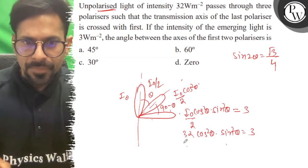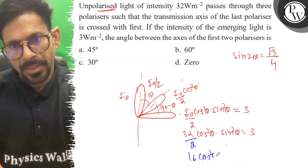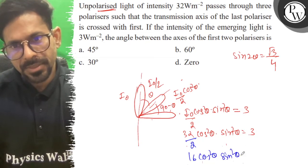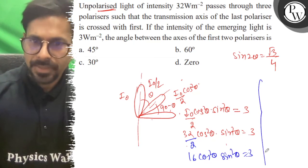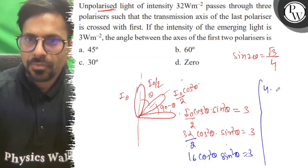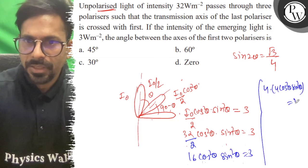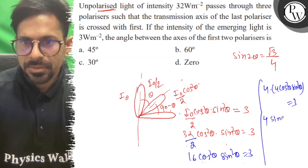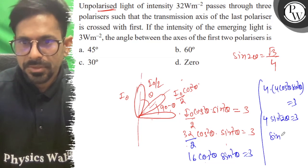So this is 16 cos squared theta sin squared theta equals 3. Now we write 4 times 4 cos squared theta sin squared theta equals 3. So 4 sin squared 2 theta equals 3, which means sin squared 2 theta equals 3/4.